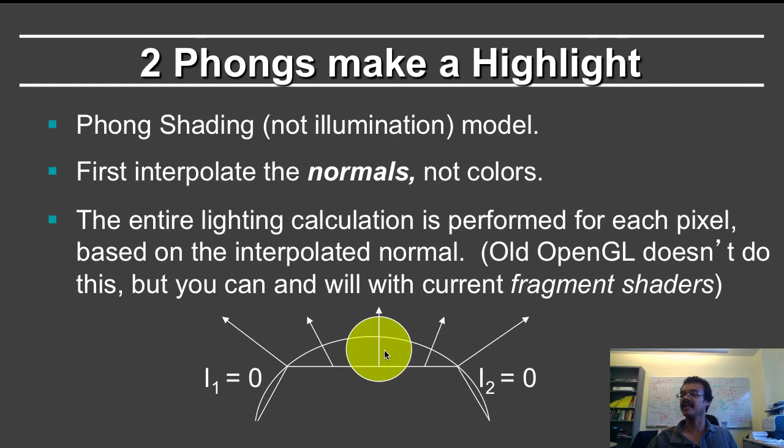So the entire lighting calculation is performed for each pixel. In old style OpenGL, there was no Phong shading, it was just Gouraud shading. And therefore you would have to break this geometry up into enough triangles that it did actually compute the shading at each vertex. But in modern OpenGL, in homework 2, you just write a fragment shader and in this way you can do perfect Phong shading.